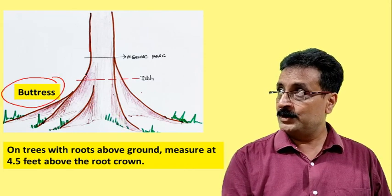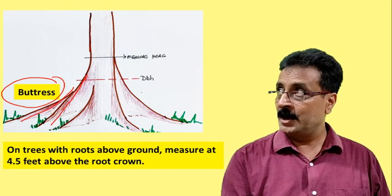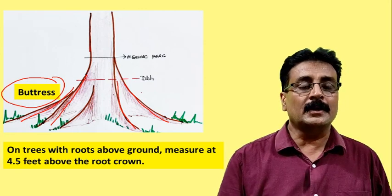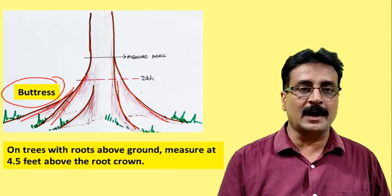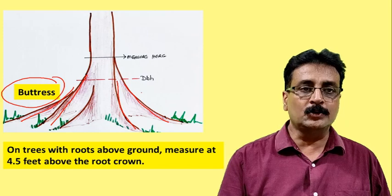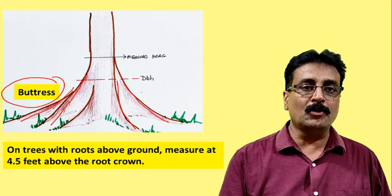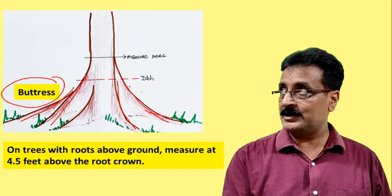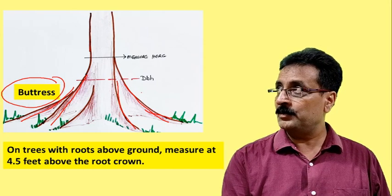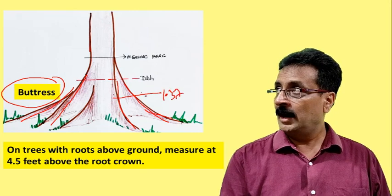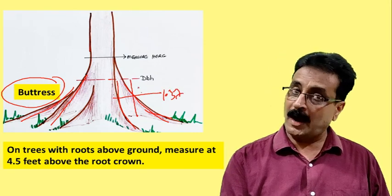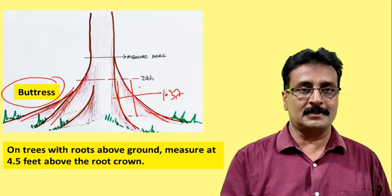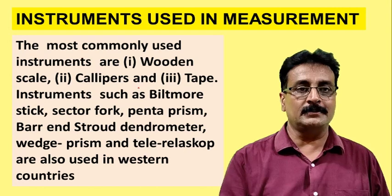Another special case is buttressing. Buttresses are roots that spread outward from the base to support the tree. This occurs mainly in tropical rainforests, where high rainfall means roots do not go very deep, so the tree spreads outward for anchorage. If buttressing extends above 1.37 meters — say up to 2 or 3 meters — you must take the diameter where the buttressing finishes. That is the rule for buttressed trees.